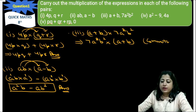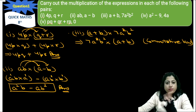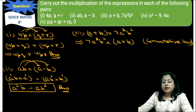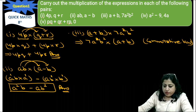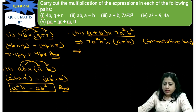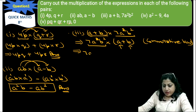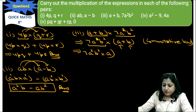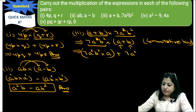If we change the place of numbers — replace the positions of numbers — this is called the commutative law. So 7a²b² will be kept in front, and (a + b) behind. This number will be multiplied with a first and then b: 7a²b² × a, plus 7a²b² × b.